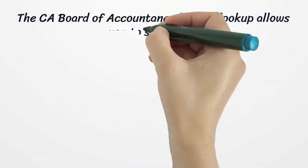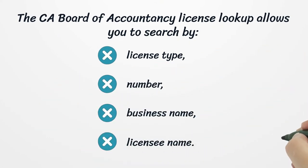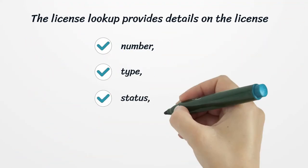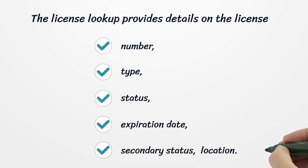The CA Board of Accountancy license lookup allows you to search by license type, number, and business name. The license lookup provides details on the license number, type, status, expiration date, secondary status, and location.